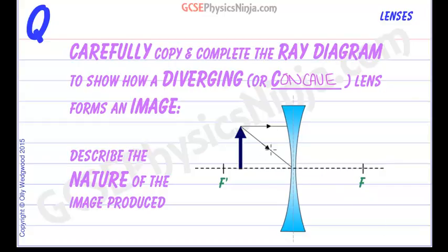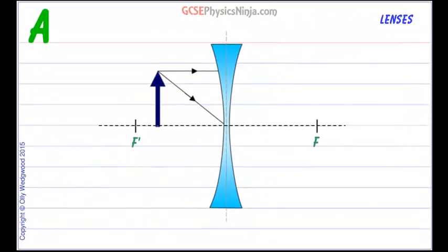We're going to select just two rays, which is all we need to draw a ray diagram. So first of all, this parallel ray of light that comes in is going to be diverged away from the principal axis as if it were to go through the principal focus on the other side.